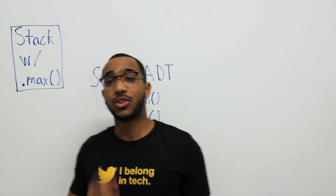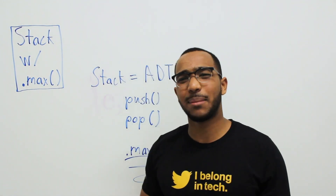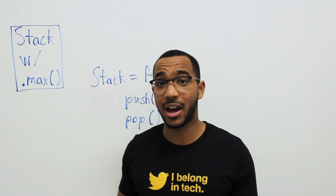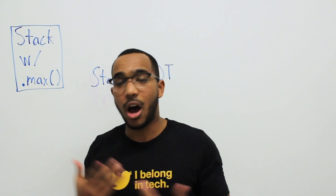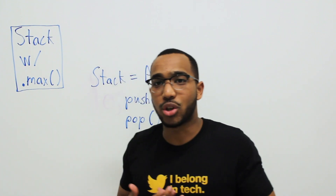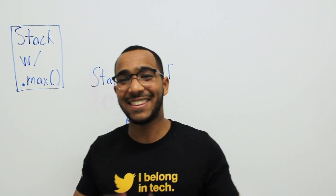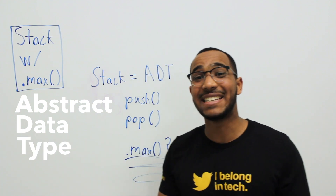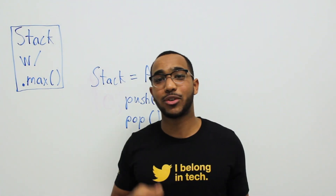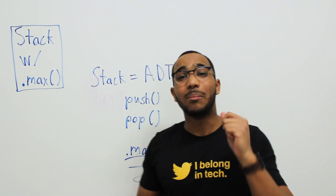Today we're going to talk about the topic 'Stack with dot max.' Whenever we say API, I think of web APIs. An API is called Application Programming Interface — all it is is a strict set of functions, properties, and behaviors we define from a certain system or underlying logic that provides us a certain behavior. This sets the fundamental basis for what is called an Abstract Data Type, an ADT.